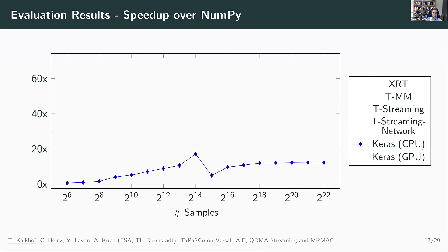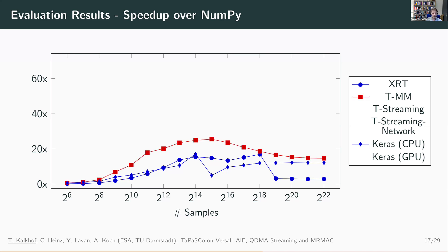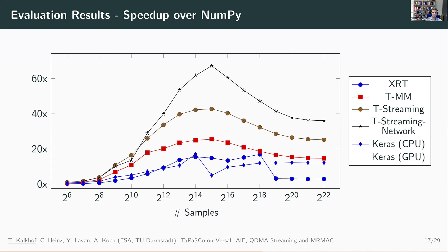Our baseline was a simple NumPy implementation. Using Keras on the CPU, we already get almost up to 20x speedup over NumPy. With XRT, we only have speedup in some cases compared to Keras on the CPU, and in some cases we are even slower. Using Tapasco in memory-mapped mode, we already have speedup above Keras for all numbers of samples. Adding the streaming capabilities of Tapasco, we see even more speedup — almost 2x more than Tapasco memory-mapped. And of course, scaling out to two FPGAs gives us even more compute power and the highest speedups. Compared to Keras on a GPU, our Tapasco streaming variant on one card is faster in most cases, with the GPU only being a little bit faster in a few cases.